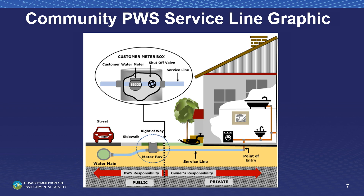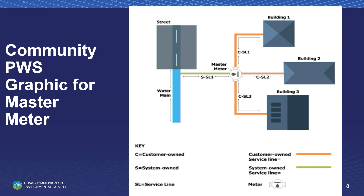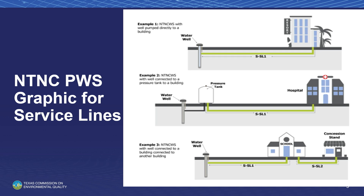This image developed by the TCEQ shows key features of a drinking water service line for a community public water system. Please note the delineation between the public and private sides of the service line. An EPA image included in the regulatory guidance for small water systems shows an example of a community water system with a master meter and multiple service lines — such as apartment complexes or shopping centers — with three separate customer-owned service lines sharing the same system-owned service line. Another EPA image shows non-transient, non-community service line configurations from the water well or pressure tank to the building inlet, and distribution lines between buildings that must be inventoried.